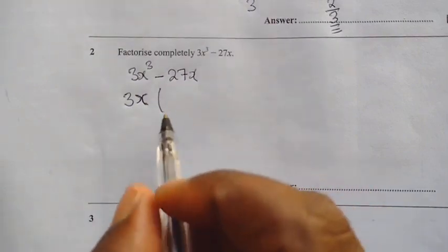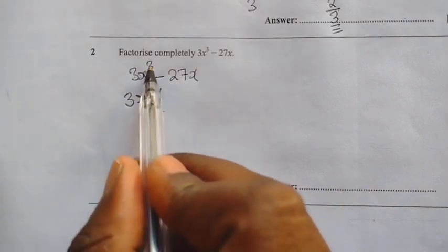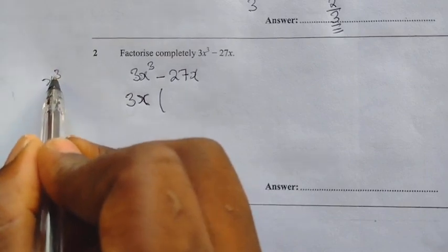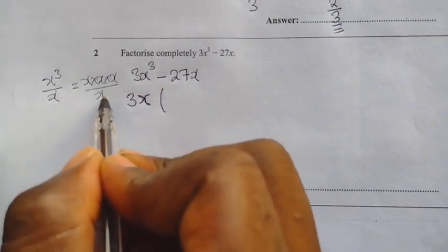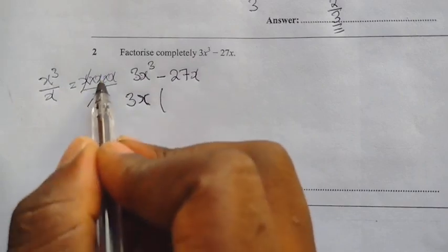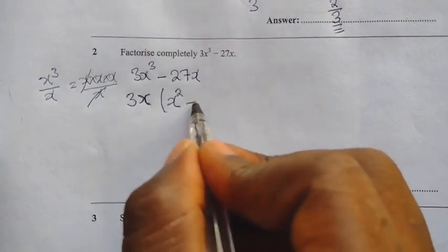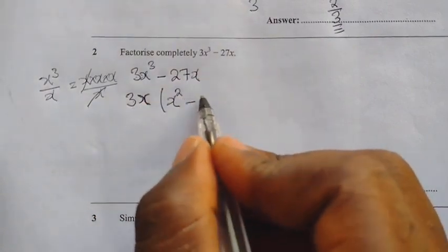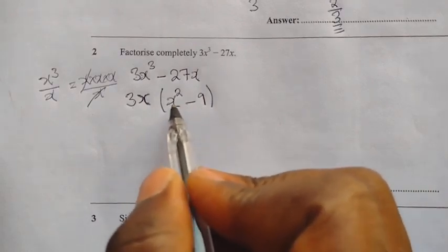The moment you factorize 3x, you open the bracket and start dividing. 3 into 3 is 1. Then x into x cubed: that's x cubed over x, which is x times x times x divided by x — you cancel one x to remain with x squared. So inside the bracket you have x squared minus 9, since 3 into 27 is 9. But you have not factorized completely because you still have x squared minus 9 inside the brackets.